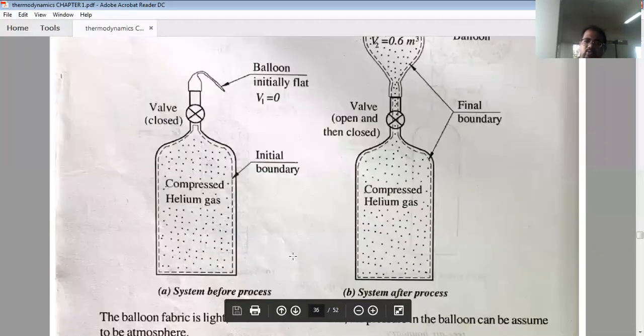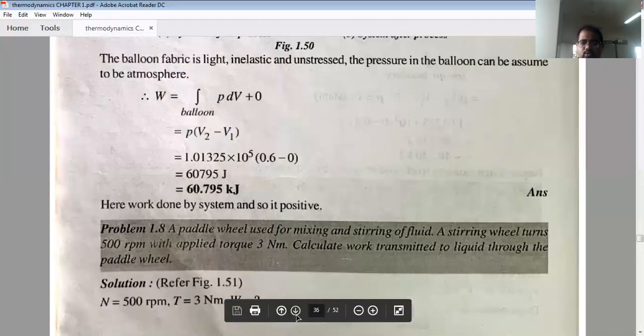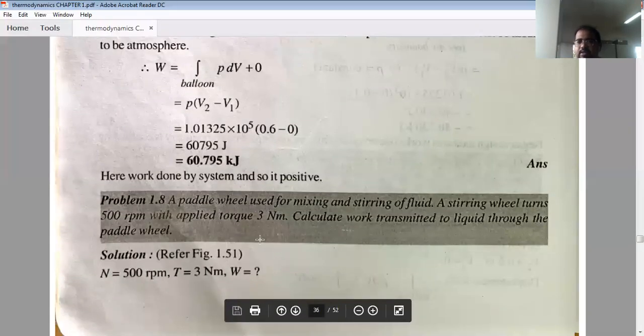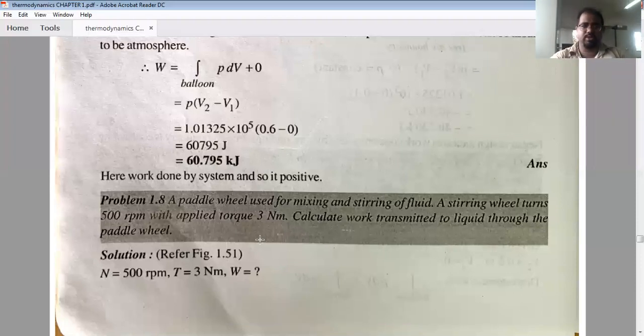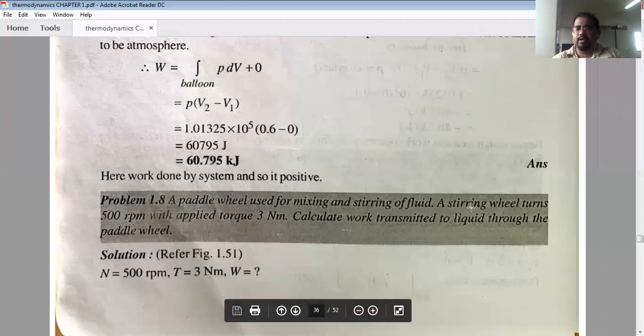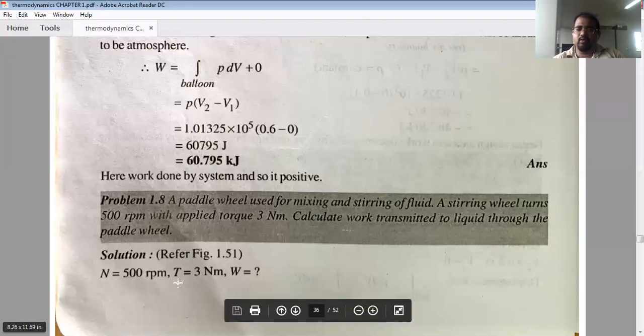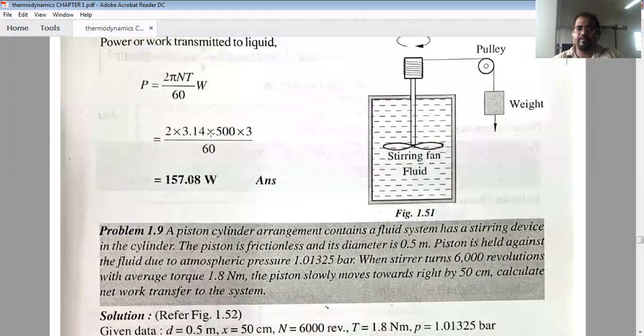Let's see. If you have another question, if you are able to do something on your level, you can add something on your level. This is the last question on work done. Question is written: A paddle wheel used for mixing and stirring of fluid. A stirring wheel turns 500 rpm with applied torque 3 Nm. Calculate work transmitted to liquid through the paddle wheel. So you have N and T. So what is your formula? Work done is 2πNT by 60. So you have 2πNT by 60, and ultimately you have 157.